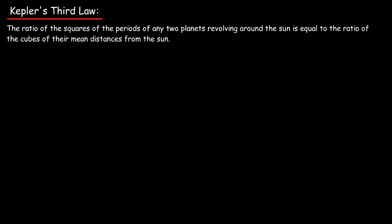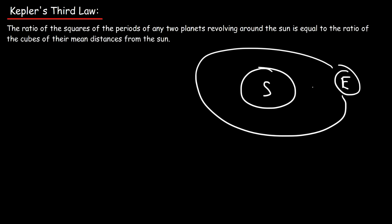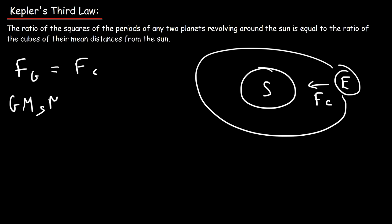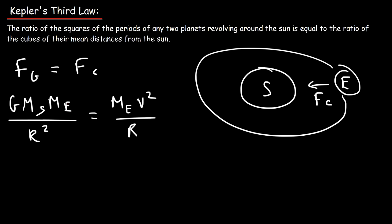To derive that equation, consider the Sun at the center and the Earth orbiting it. The gravity provides the centripetal force, so we set the gravitational force equal to the centripetal force: G·M_sun·M_earth / r² = M_earth·v² / r. We can cancel the mass of the Earth and one factor of r from both sides, giving G·M_sun / r = v².